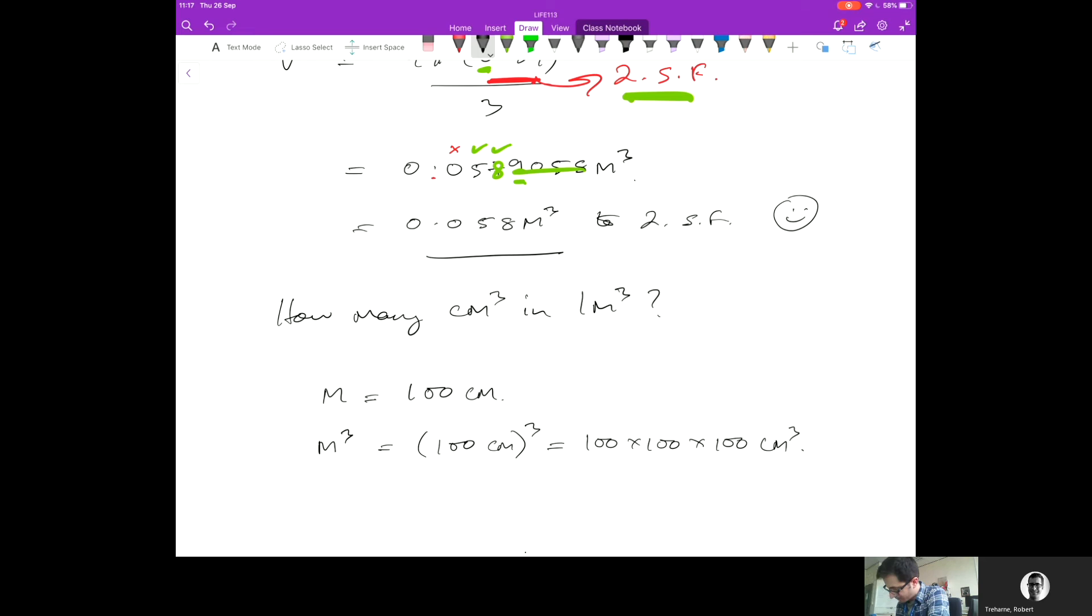That's one, two, three, four, five, six - one million centimeters cubed. So how do I convert 0.058 meters cubed into centimeters?